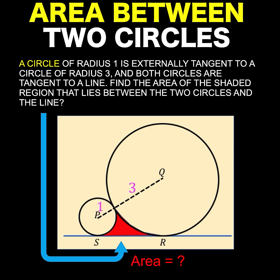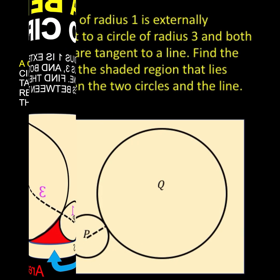Hi everyone, here is our math problem for today. A circle of radius 1 is externally tangent to a circle of radius 3, and both circles are tangent to a line.